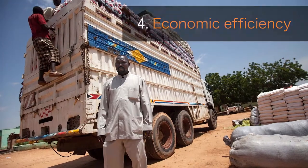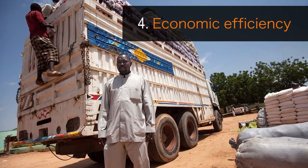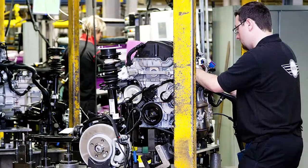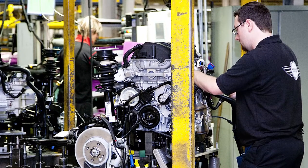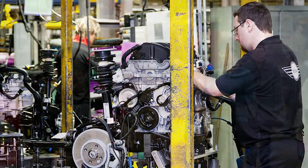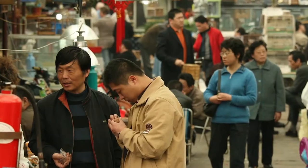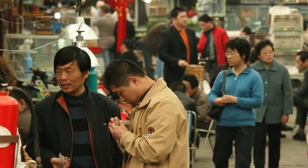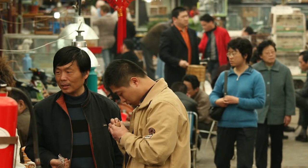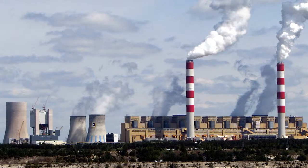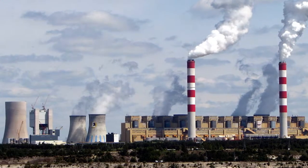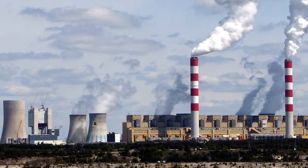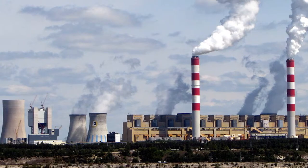Number four: economic efficiency. Governments have to balance economic efficiency and growth with the possible negative consequences of that growth. It's their job to prevent abuses of market power by large corporations, as well as worker exploitation and environmental degradation.